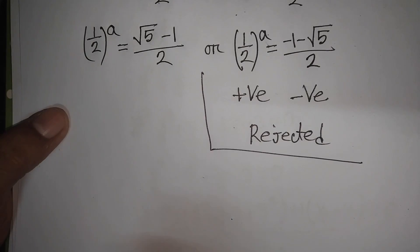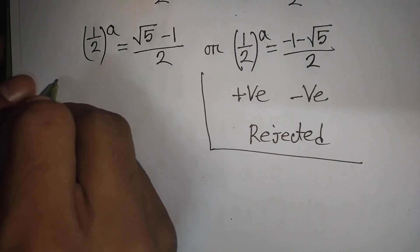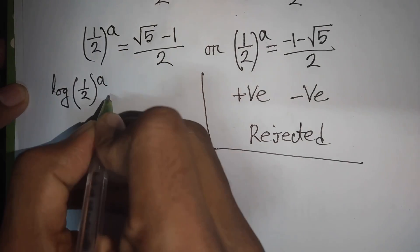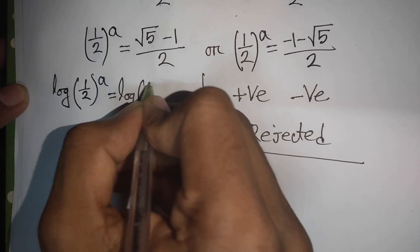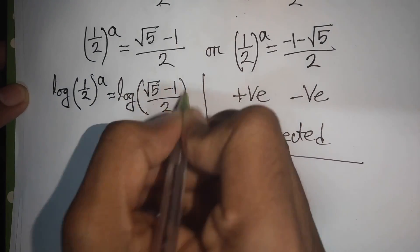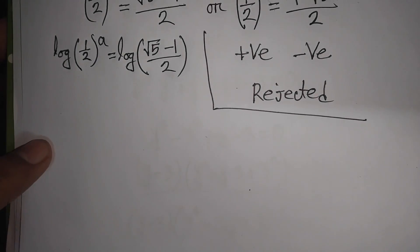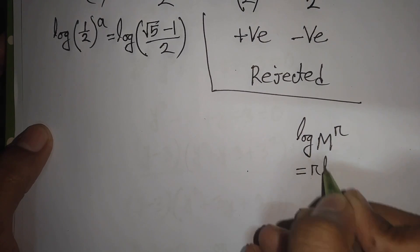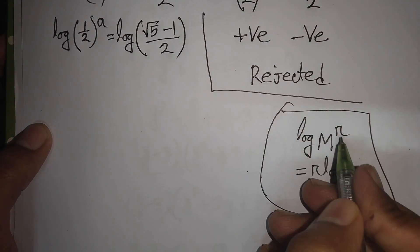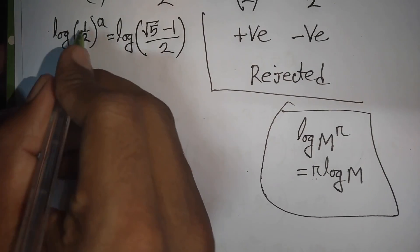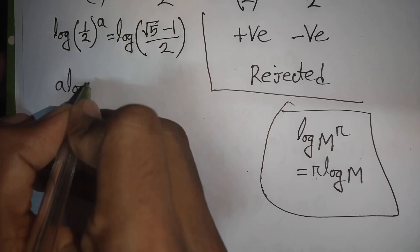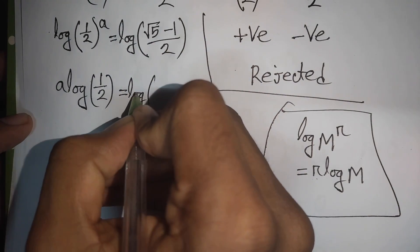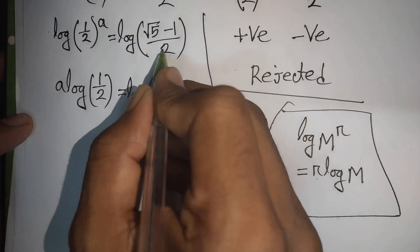From here we apply log to both sides. So we write: log of (1/2) to the power a equals log of (square root of 5 minus 1) divided by 2. We apply the rule that log of m to the power r equals r times log m, so the power a moves to the front: a times log(1/2) equals log of (root 5 minus 1) over 2.